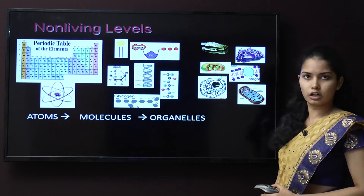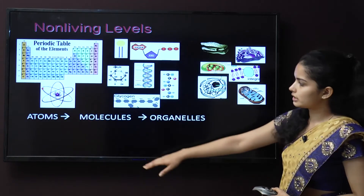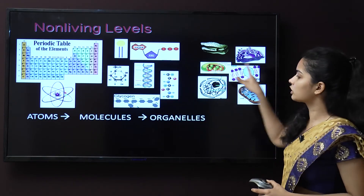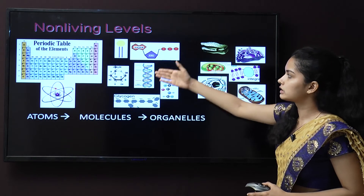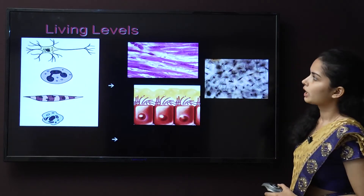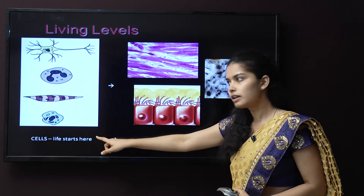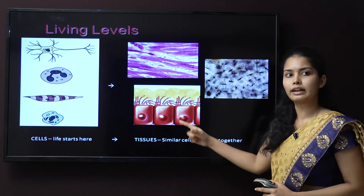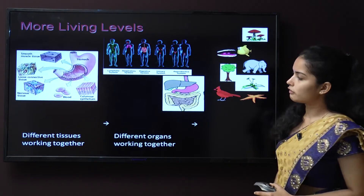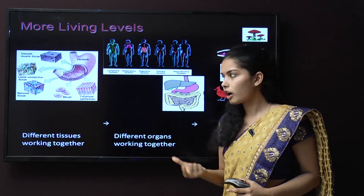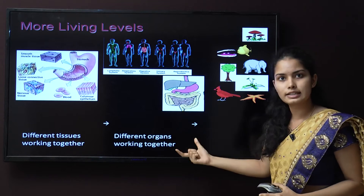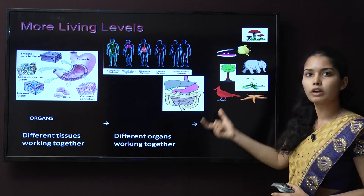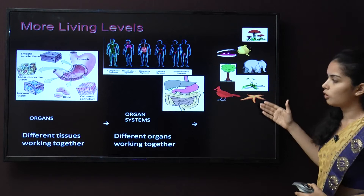In the non-living levels, as you can see, from atoms, molecules are formed from the periodic table. From molecules, organelles are formed — carbohydrates, nucleotides, etc. In the living levels, the first unit is the cell, where life starts. Different cells performing functions together form tissues, tissues form organs, organs form organ systems — more than one organ working together — and all organ systems together make the whole organism.